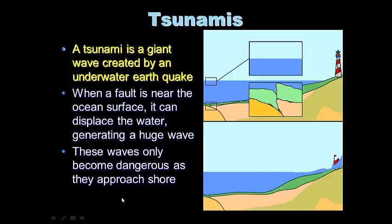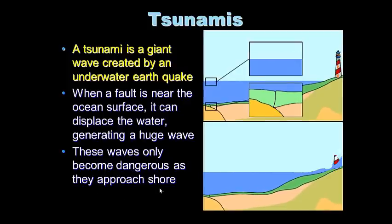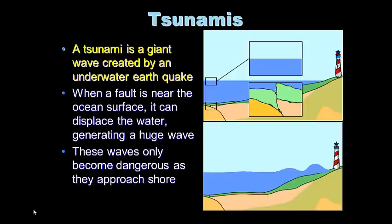When a fault near the ocean surface displaces water, it generates a huge wave. These waves only become dangerous as they approach shore — out in open sea you probably won't even notice a tsunami. As they near shore they get taller, surge, and approach the shoreline at great speed, taking out everything in their path. Small tsunamis exist too and don't do much damage.